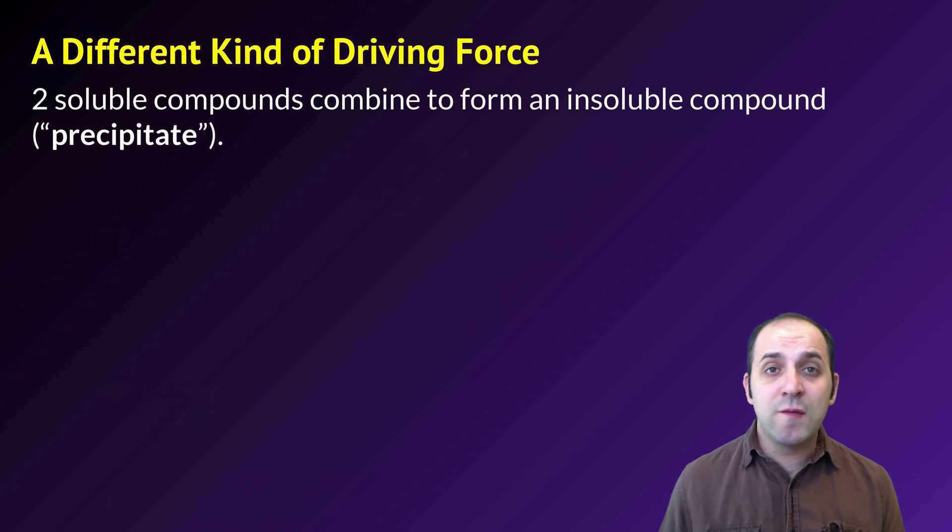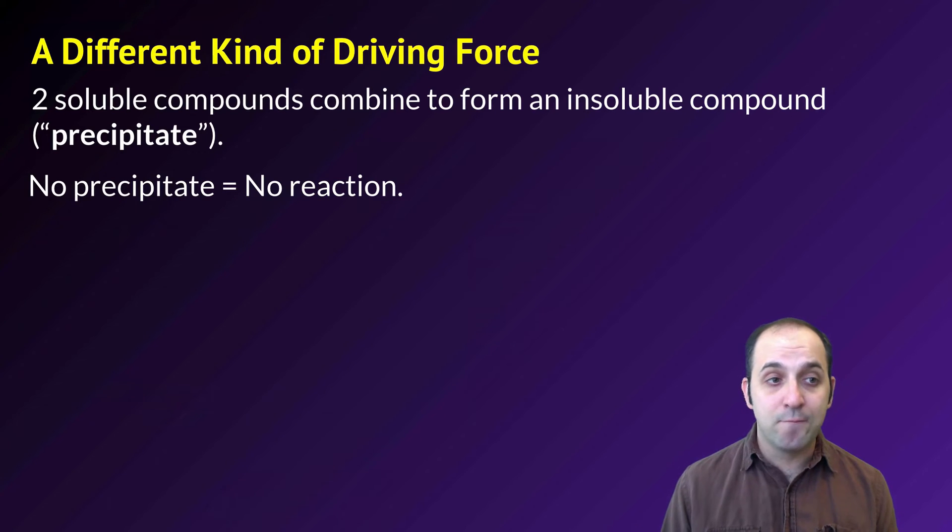Like I said, double replacement reactions are not redox reactions, so they're going to need a different kind of driving force that's not due to the exchange of electrons. In a double replacement reaction, two kinds of soluble compounds are going to combine to make an insoluble compound, which is called the precipitate. If we do not get a precipitate formed, we will not have a reaction occurring. This is not a redox reaction. There's going to be no change in oxidation states over the course of this reaction.